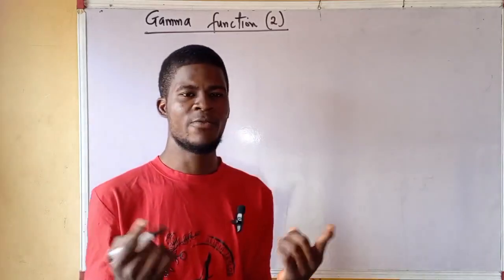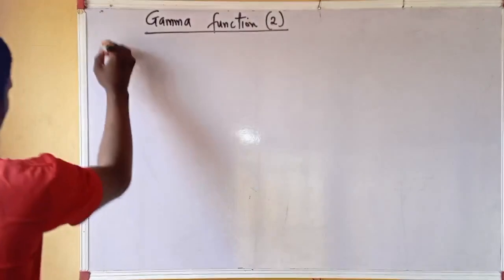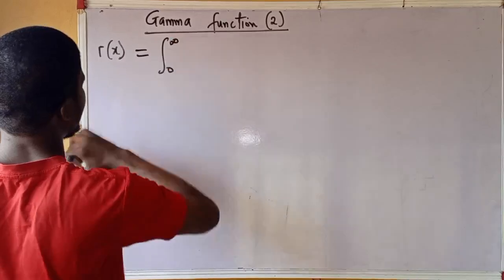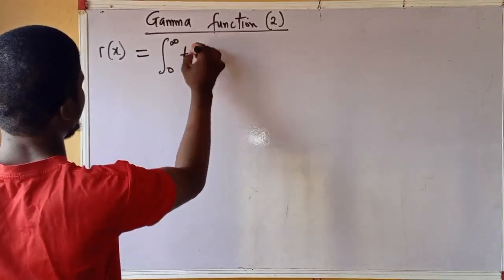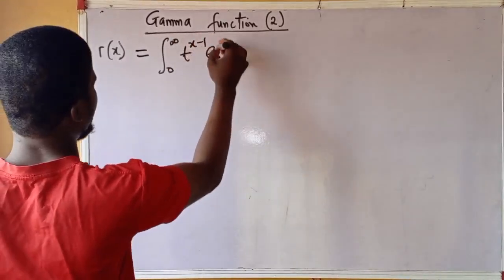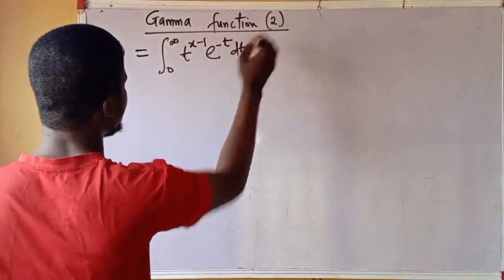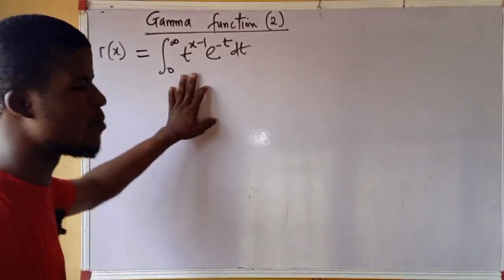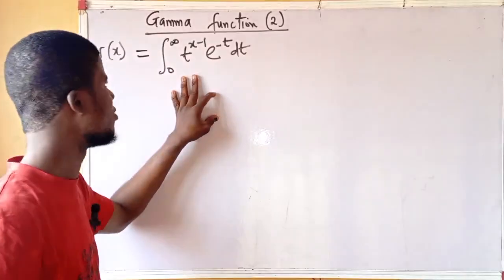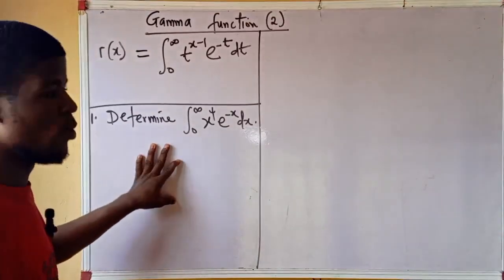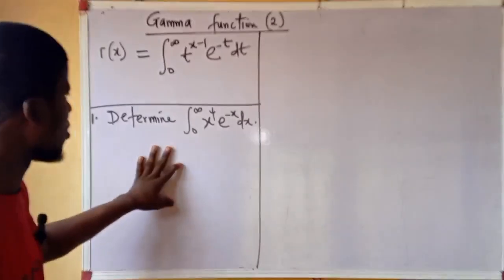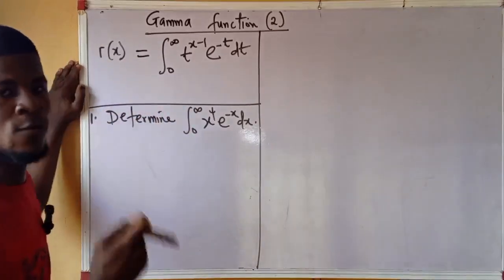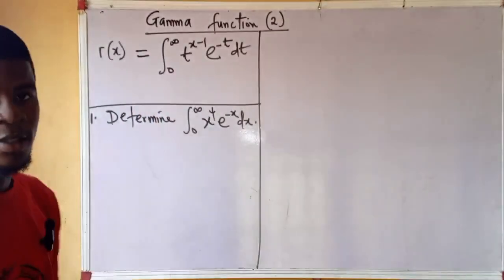In the first video on gamma function, we said that gamma of x is equal to the integral from 0 to infinity of t to the x minus 1, times e to the power of minus t, dt. Integrals of this form can be evaluated using the gamma function. Now, I want to evaluate this integral: the integral from 0 to infinity of x to the power of 4, times e to the power of minus x, dx.